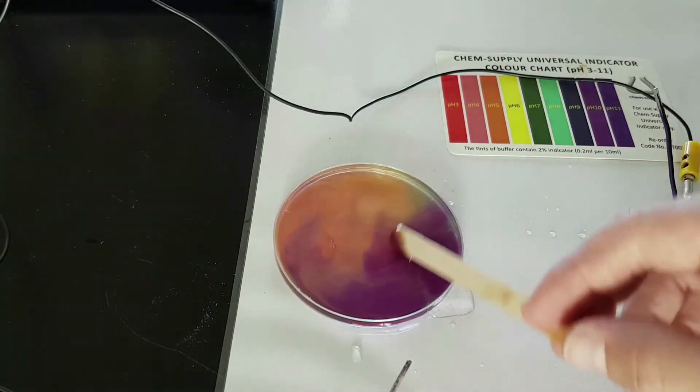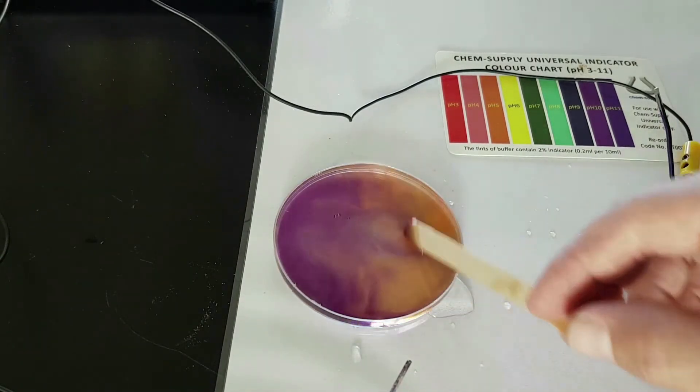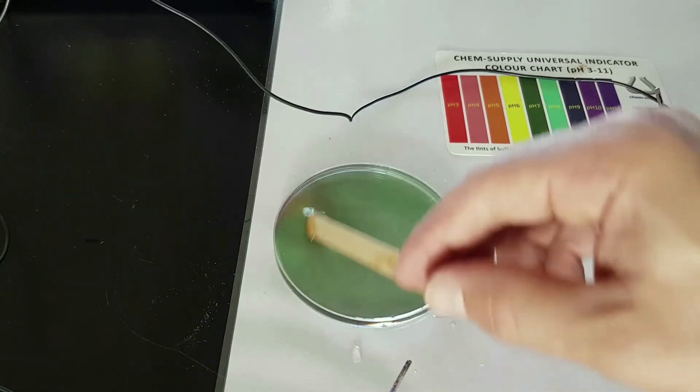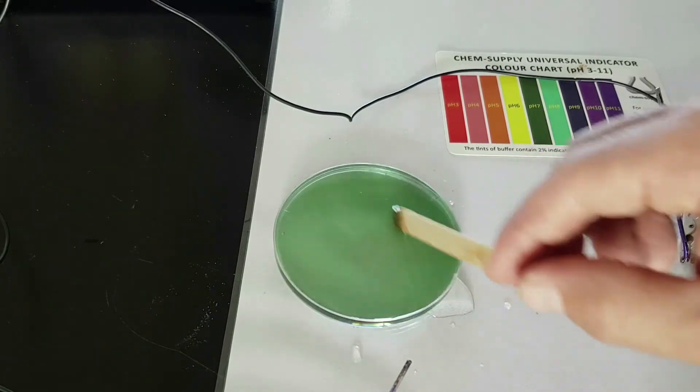To show the water is neutral, mix both of these together. When it forms water again, it should turn green, showing that it is neutral.